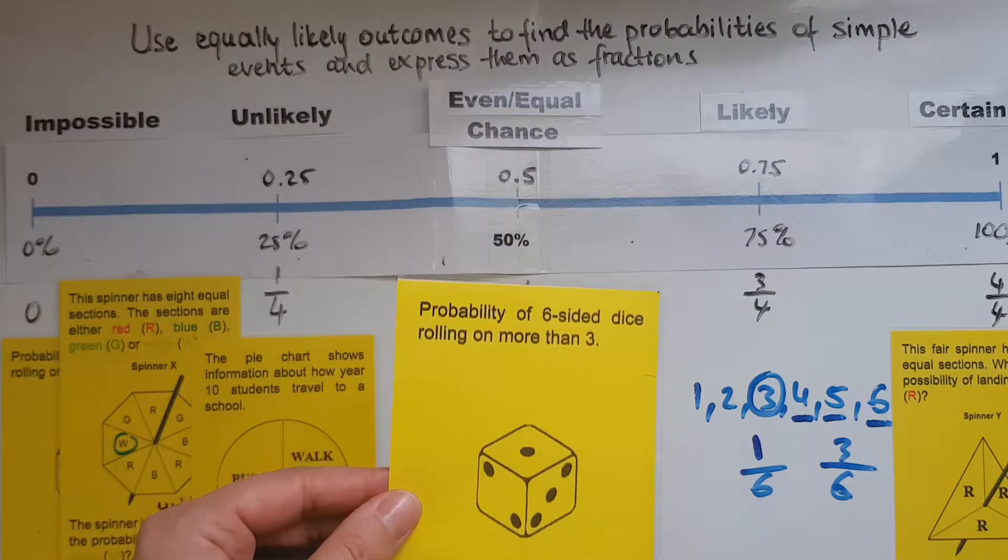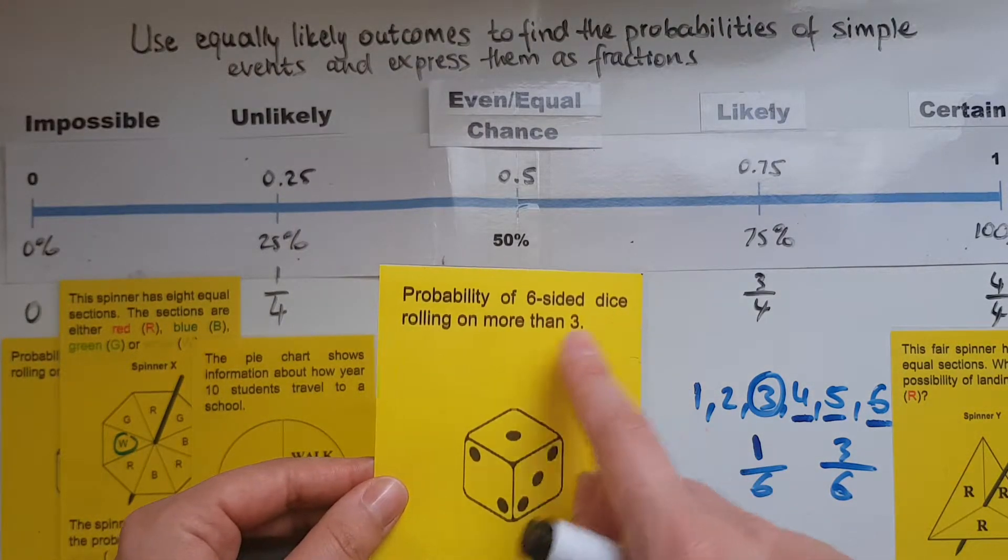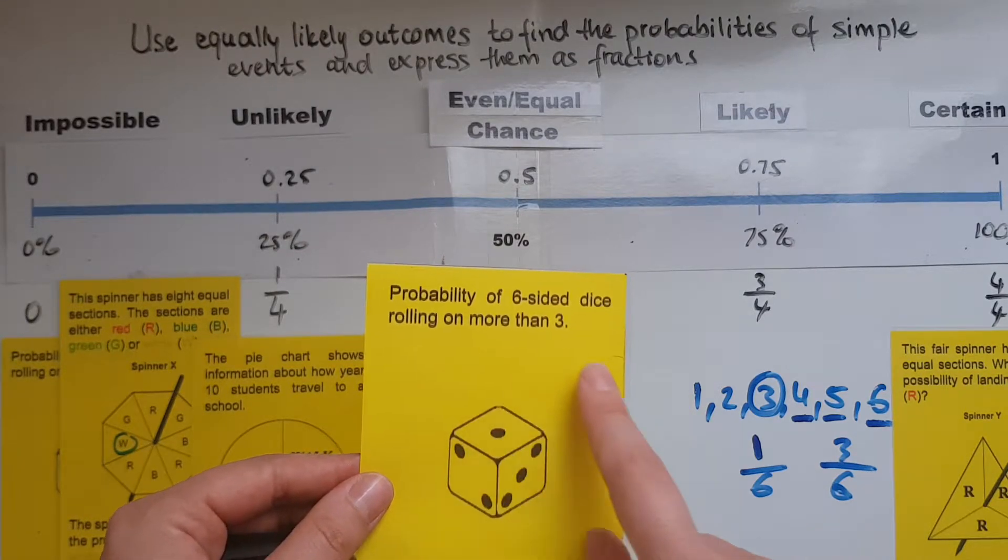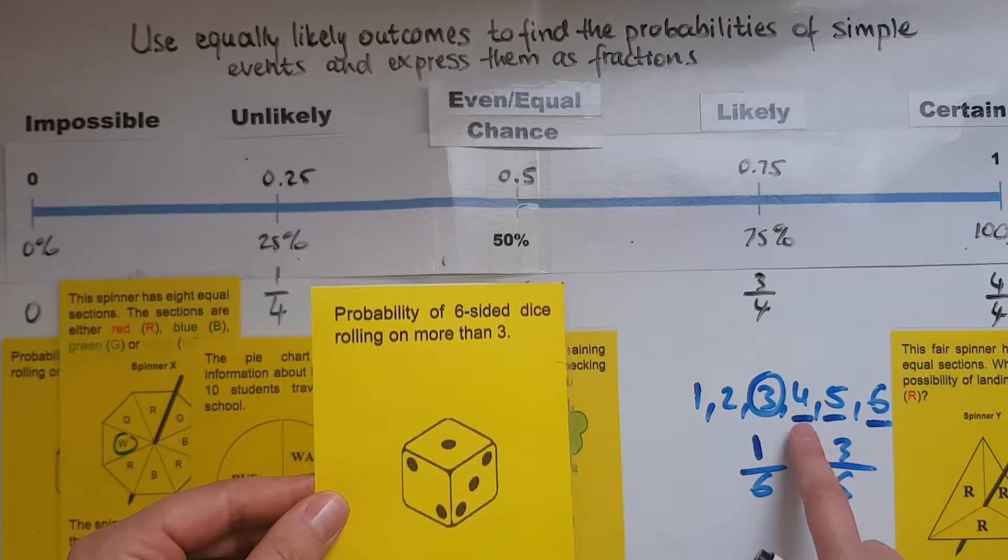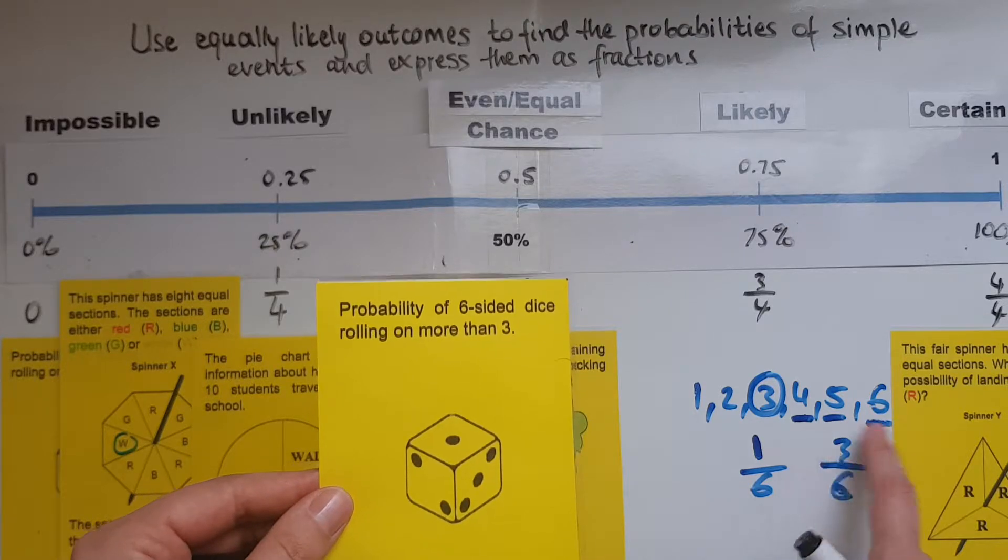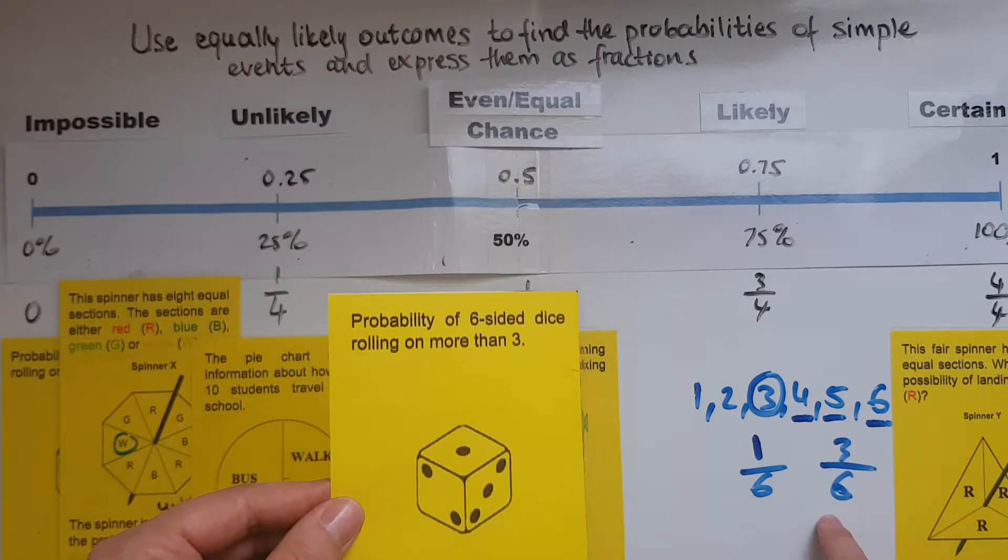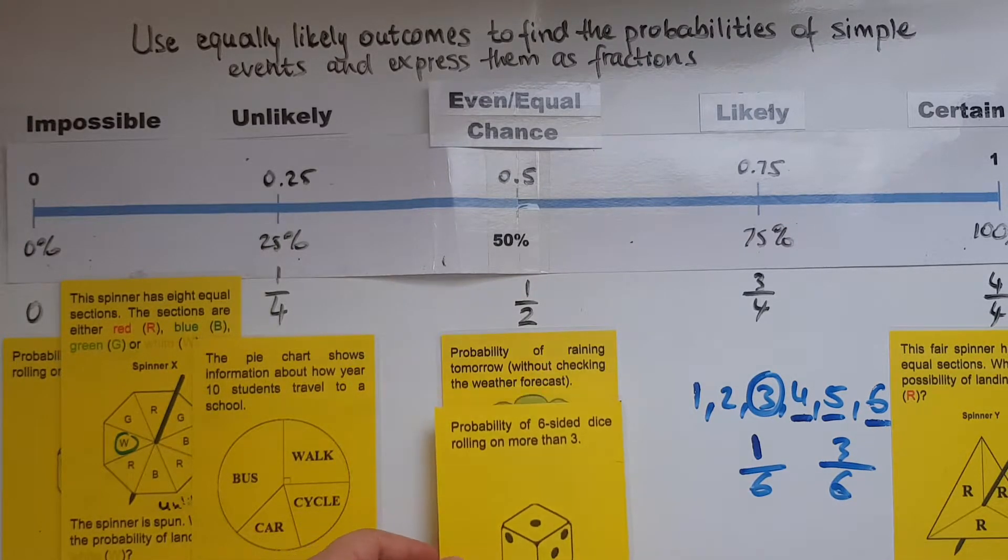And so was the probability of the six-sided die rolling on more than three. So more than three we had four, five, or six which is three of them out of the six possible, which is the same as a half.